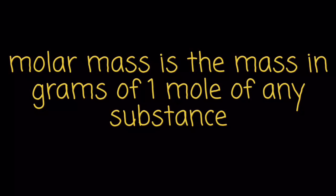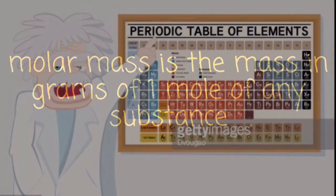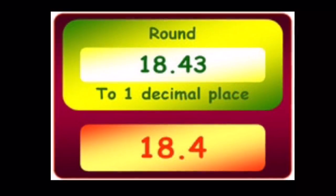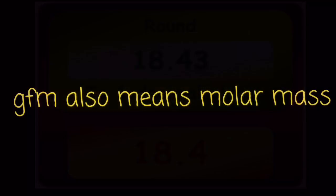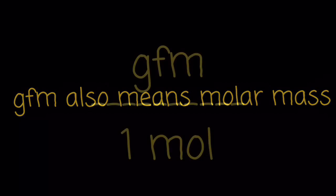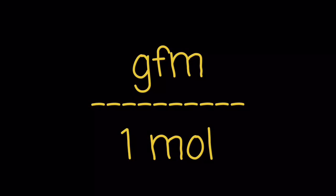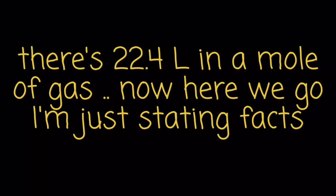Molar mass is the mass in grams of one mole of any substance. It's found by taking the atomic weight from the periodic table and rounding to ones place. GFM also means molar mass. GFM is one mole, and there's 22.4 liters in a mole of gas.